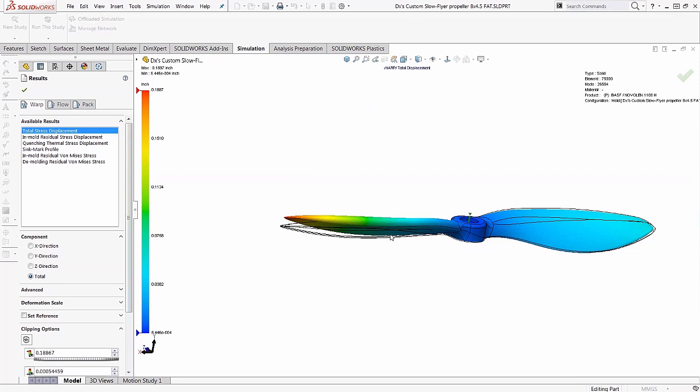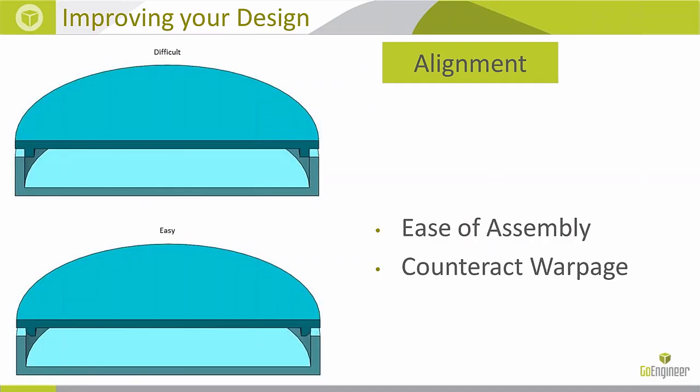A few more alignment solutions: a stepped edge with a small locating feature helps keep two halves aligned along the inner perimeter of an enclosure. For a box with holes and mounting bosses, slotting one hole slightly accommodates minor warpage so that variation isn't obvious or evident to the naked eye.